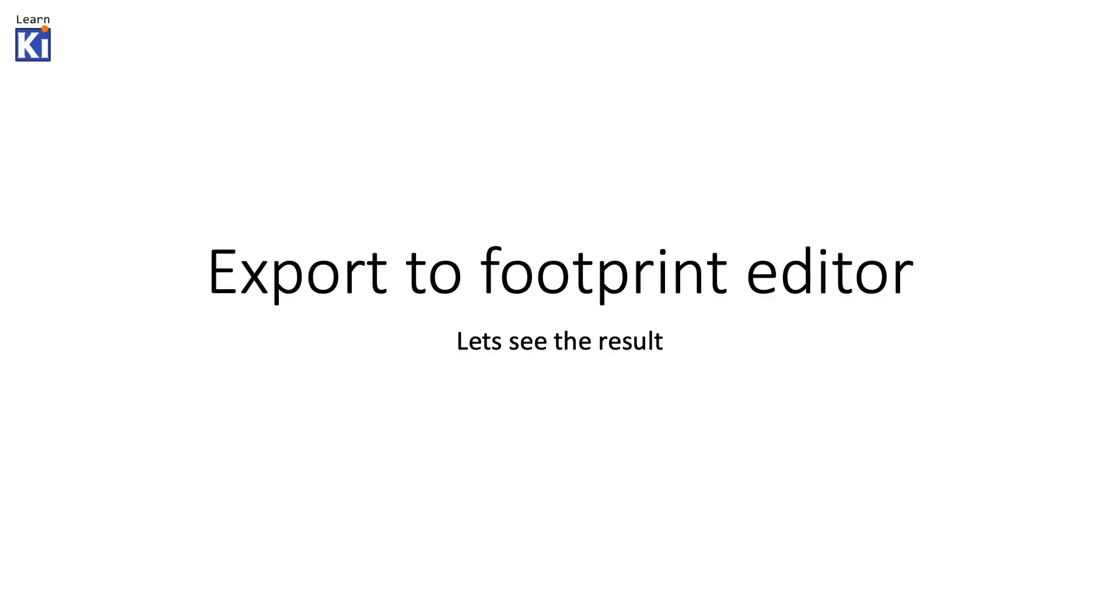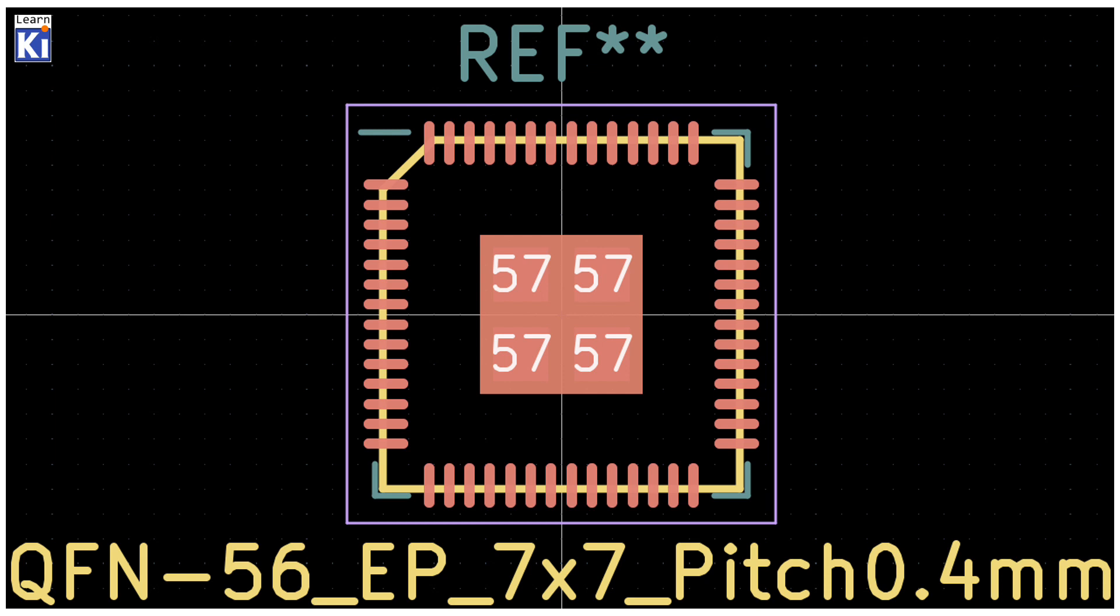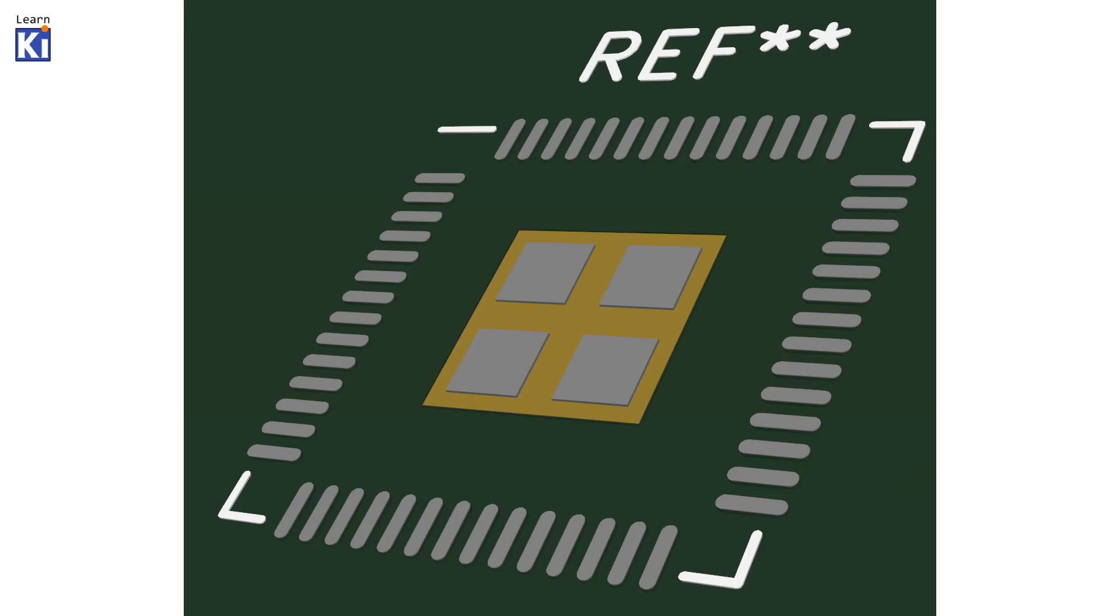So, then you can export it to see the actual result. Here we see it. We can see the pin 1 marking in the upper left corner because the silkscreen is different from all the other. And the margin around it. And the yellow line is the actual footprint or the actual packaging.